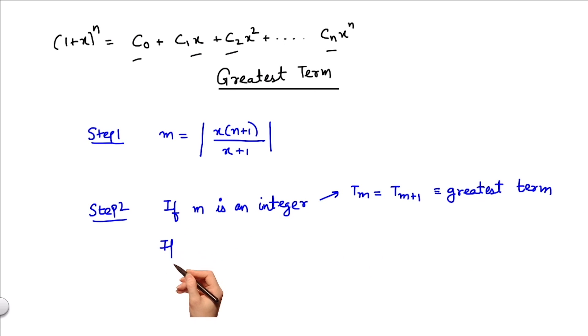Else if m is not an integer, then the greatest integer of (m+1)th term is the greatest term numerically in the expansion of (1+x)^n.